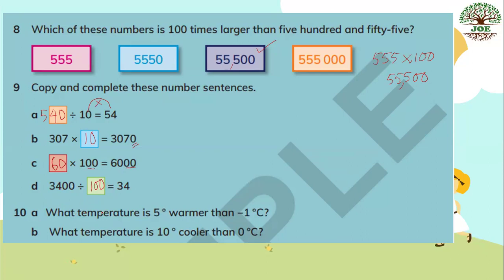Number ten, Part E: what temperature is 5 degrees warmer than negative 1 degree Celsius? Here is 0 and here is negative 1. Five degrees warmer means we go to the right 5 units — that is 1 unit to zero and another 4 degrees, so the temperature is 4 degrees Celsius. Part F: what temperature is 10 degrees cooler than 0 degrees Celsius? From 0 we jump back 10 units to negative 10 degrees Celsius.